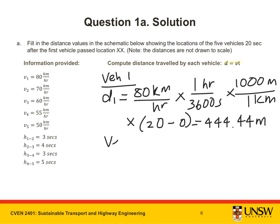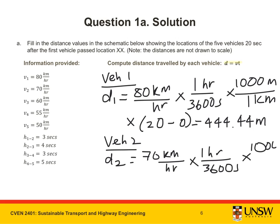For vehicle 2, the distance travelled is equal to 70 km per hour, converted into meters per second once again, multiplied by the time.